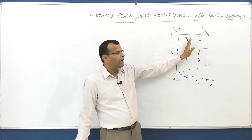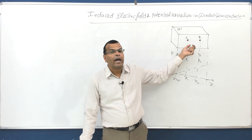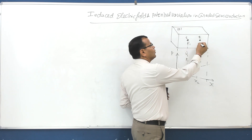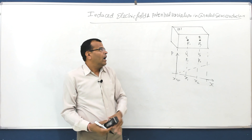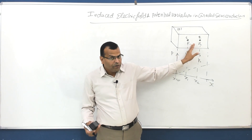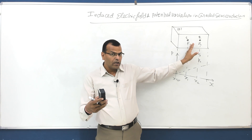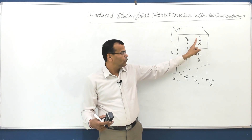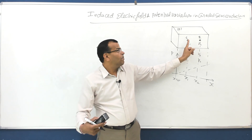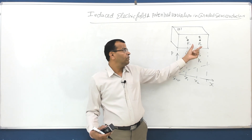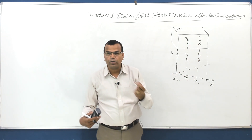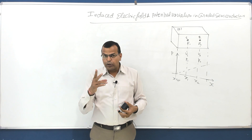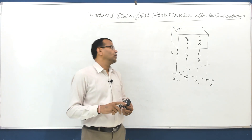Since the bar is open-circuited there is no closed path, so the diffusion current is counterbalanced by an induced electric field. Say the induced field is E1 at one point and E2 at another. That field is automatically induced inside the semiconductor. When there is an electric field there is a potential gradient, and when there is a potential gradient there is a drift current. So the diffusion current is counterbalanced by drift current due to the induced electric field, and the net current is zero.